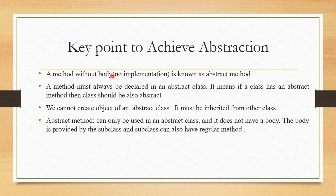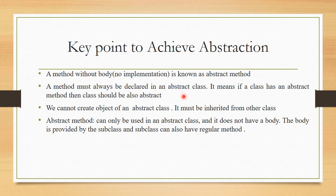Some key points to achieve abstraction: a method without body — with no implementation — is known as an abstract method. Abstraction can be achieved with either abstract classes or interfaces. We will discuss this thoroughly in the separate chapter based on abstraction.